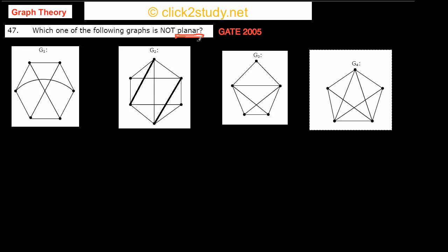A graph is planar when we can draw it on a plane such that the edges don't cross. You can see the edges are crossing in all of these graphs. So what you have to do is find a way of drawing them so they don't cross. For three graphs you will be able to find such a way, but for one graph, no matter how you draw it, the edges will always cross.